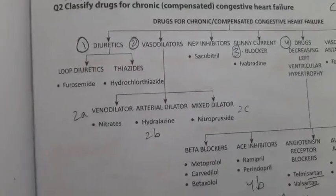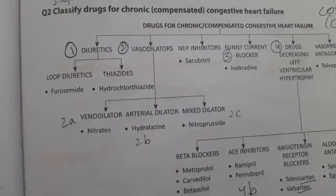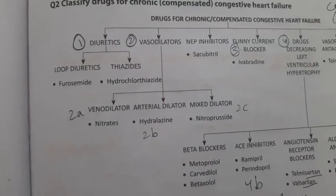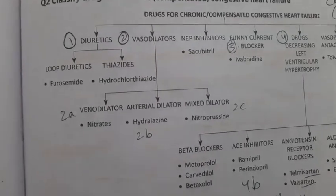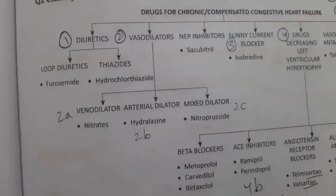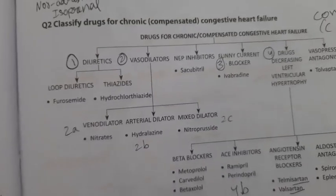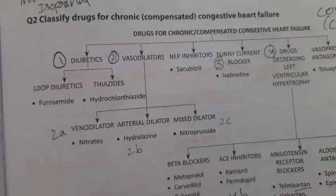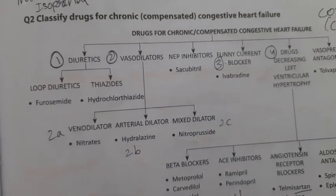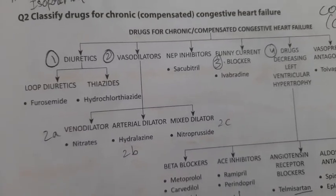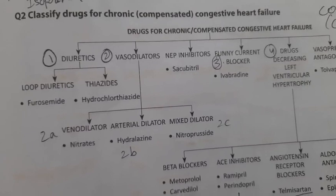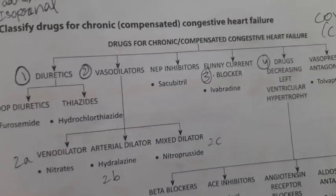Vasodilators — for example, venodilators such as nitrates, and arterial dilators such as hydralazine. Mixed dilators include nitroprusside.